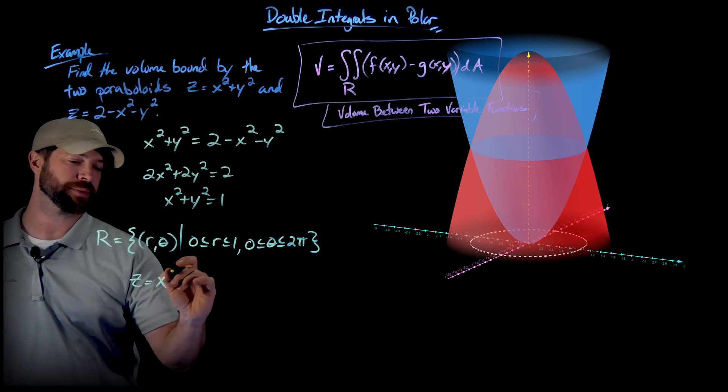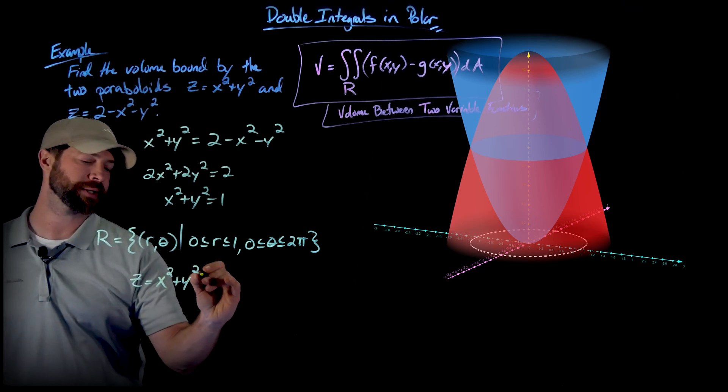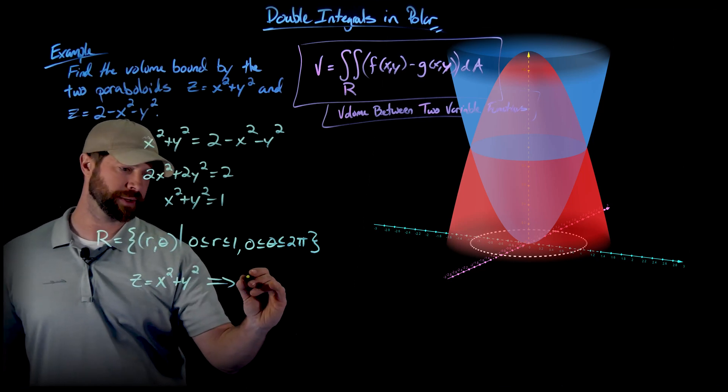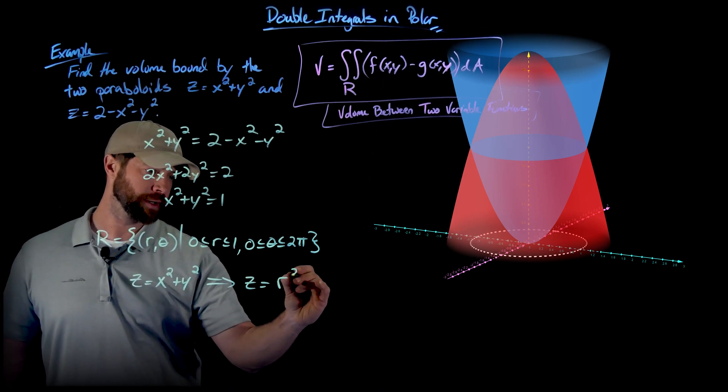So z equals x squared plus y squared. When I put that into polar, I know x squared plus y squared is r squared. So this is simply the function r squared.